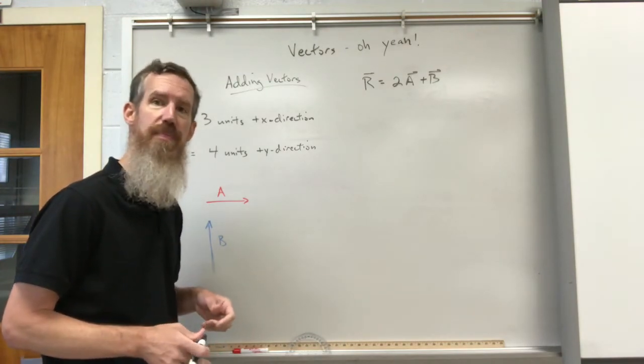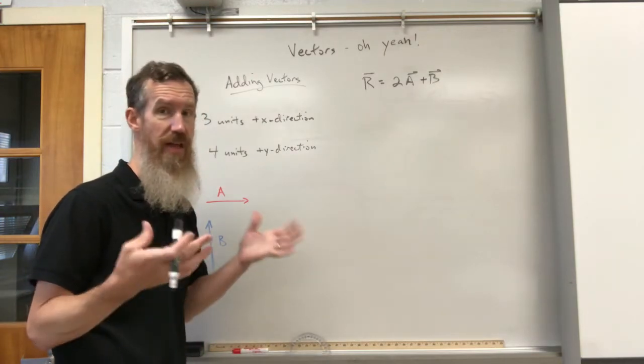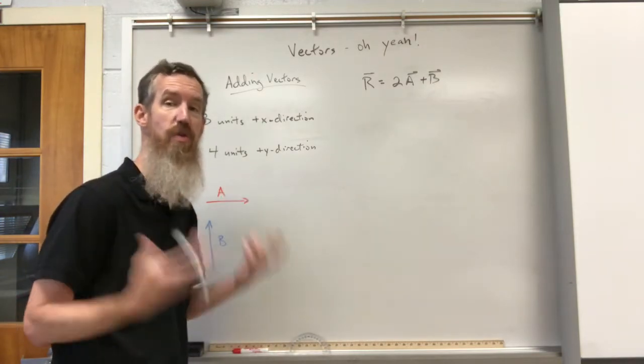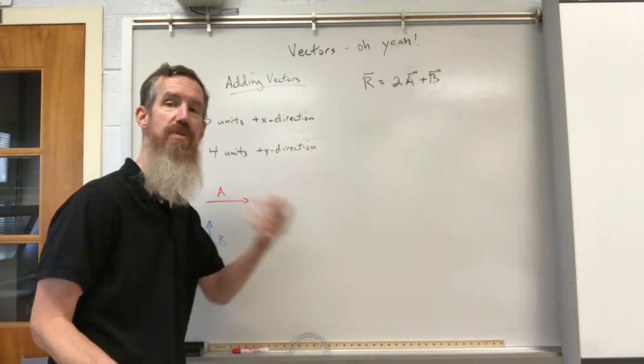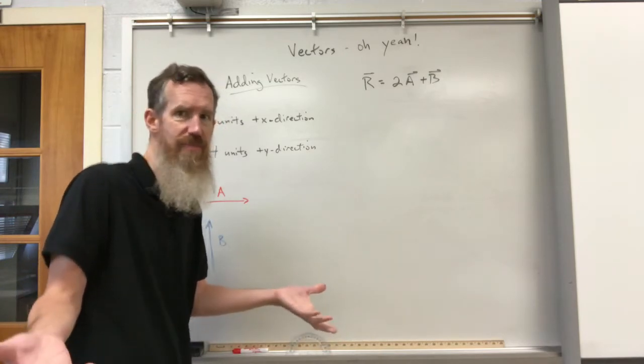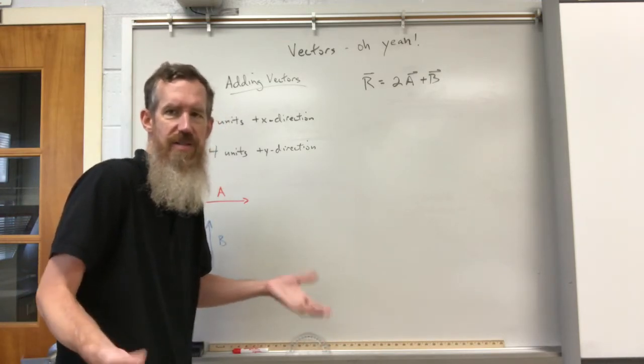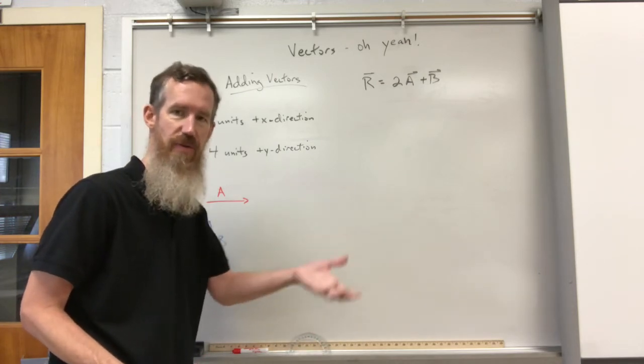By the way, I should mention, even in all the previous problems, you can only add vectors if they are the same unit. You can only add meters with meters. You can only add newtons with newtons. You cannot add newtons and meters. Even though they're both vectors, you just can't add them. They don't match, and that's just a rule of math.